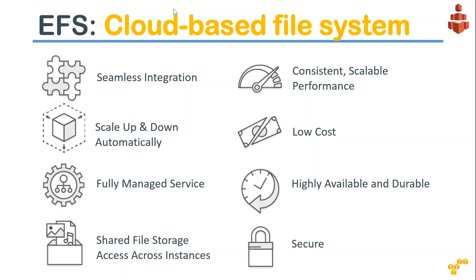EFS is highly available and durable because it is built on top of S3, which offers 11 nines of durability. This service uses storage from the S3 service, so it is very highly available and durable. You can enable encryption by checking a box using Amazon-managed keys or your own keys. You can also use security groups and firewalls to control which instances can connect, and whether to allow or block internet access to your EFS file system.